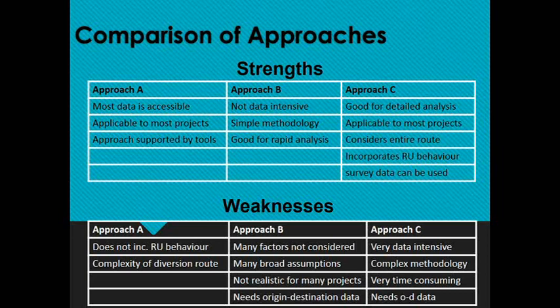Further weaknesses of Approach A include the complexity of the diversion route. When looking five to ten years ahead, we may not know the future behaviour of operators, or which route they'll actually take. The route assumed may not be usable due to alignment issues that prevent heavy vehicles from using it, and that may not get picked up in the analysis.